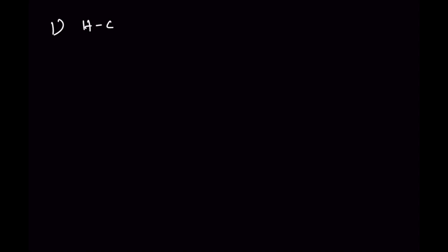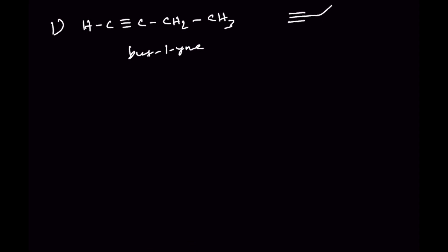Number one: we can write but-1-yne — HC≡C-CH2-CH3 — and the same structure in bond line notation. This is but-1-yne.